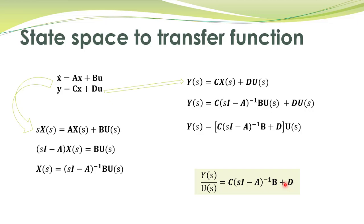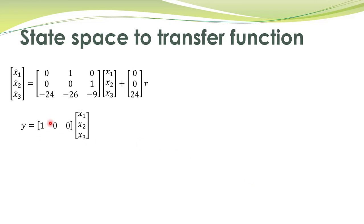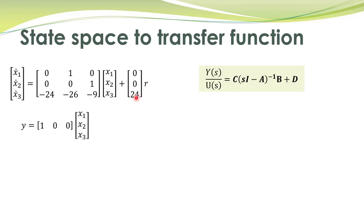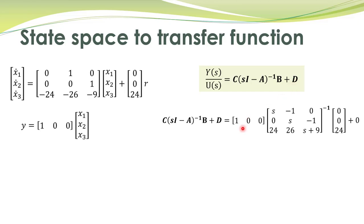Let's demonstrate this with the help of an example. Here we have the state-space representation of a system and we want to obtain the transfer function. We know the transfer function is given by the expression derived on the previous slide. The C matrix is written here, I is the identity matrix — in this case of size 3×3 — the A matrix is here, D matrix is this one, and D equals zero in this case. So we compute C multiplied by (sI − A) inverse, which is this term, multiplied by B, plus D which is zero.